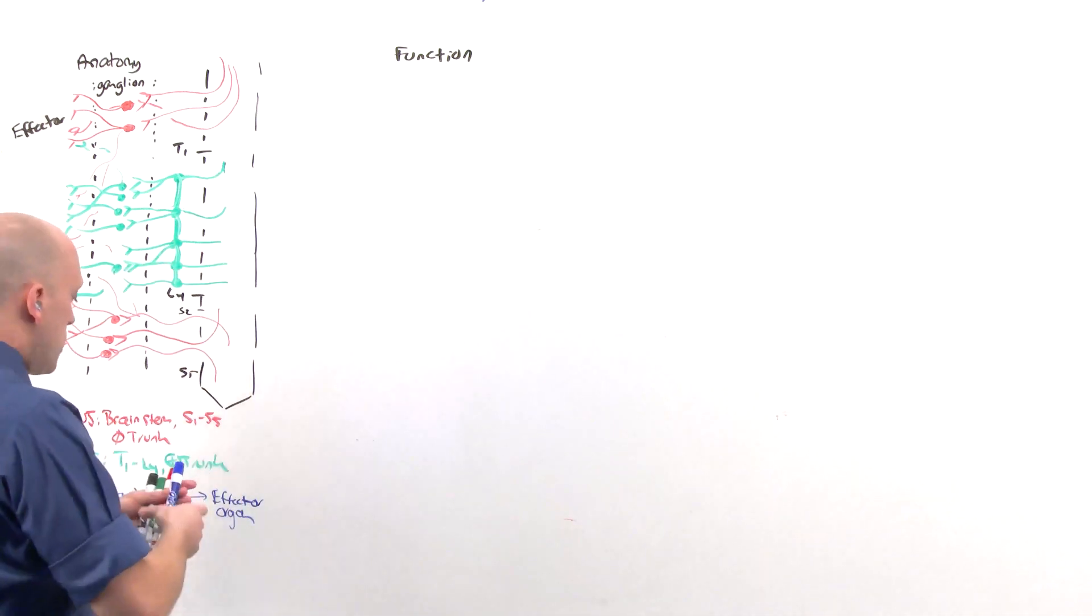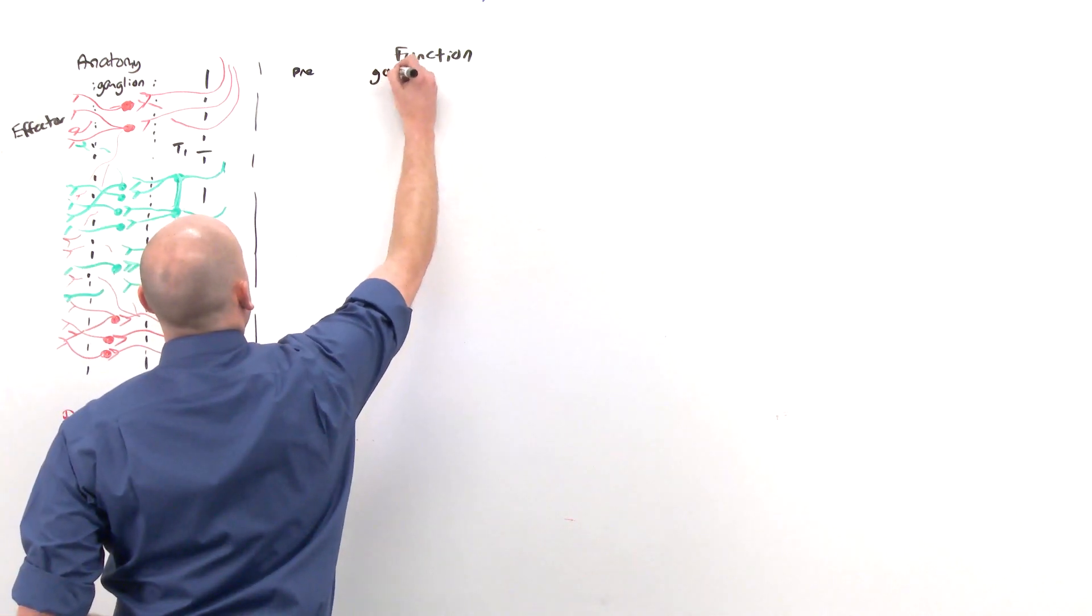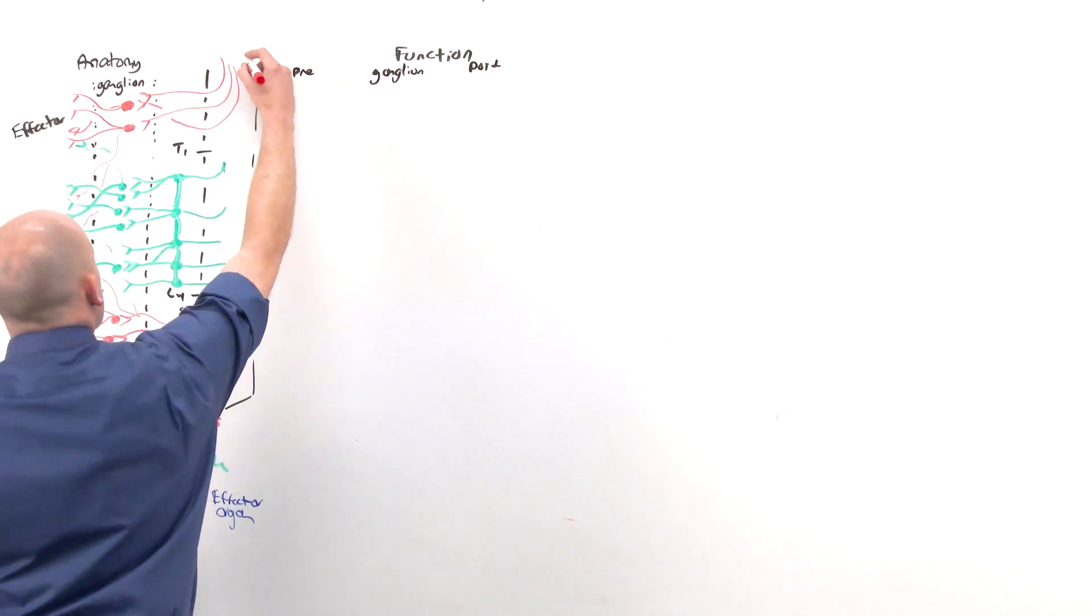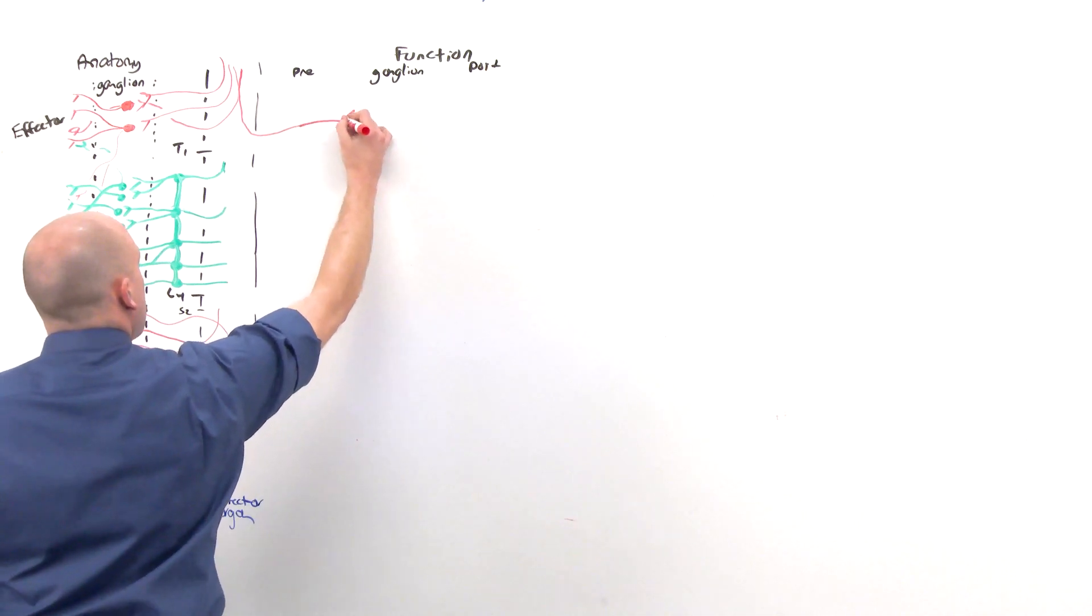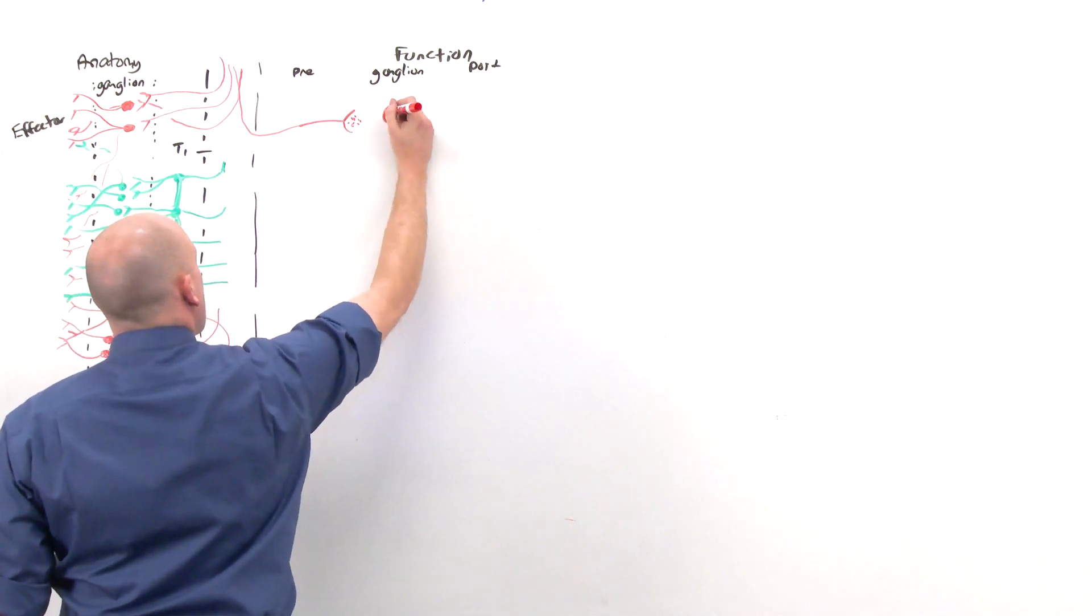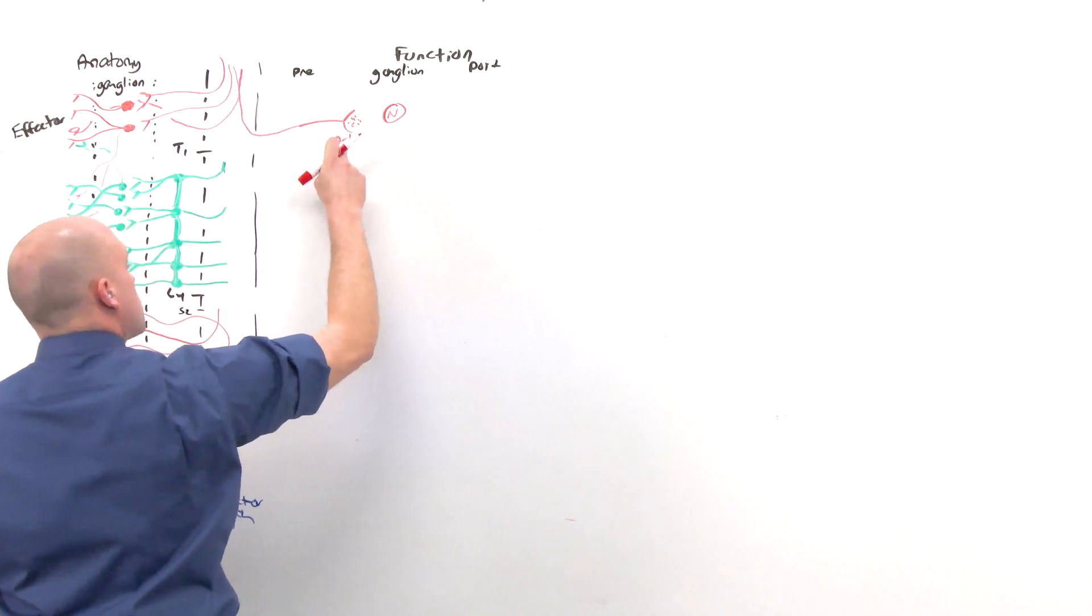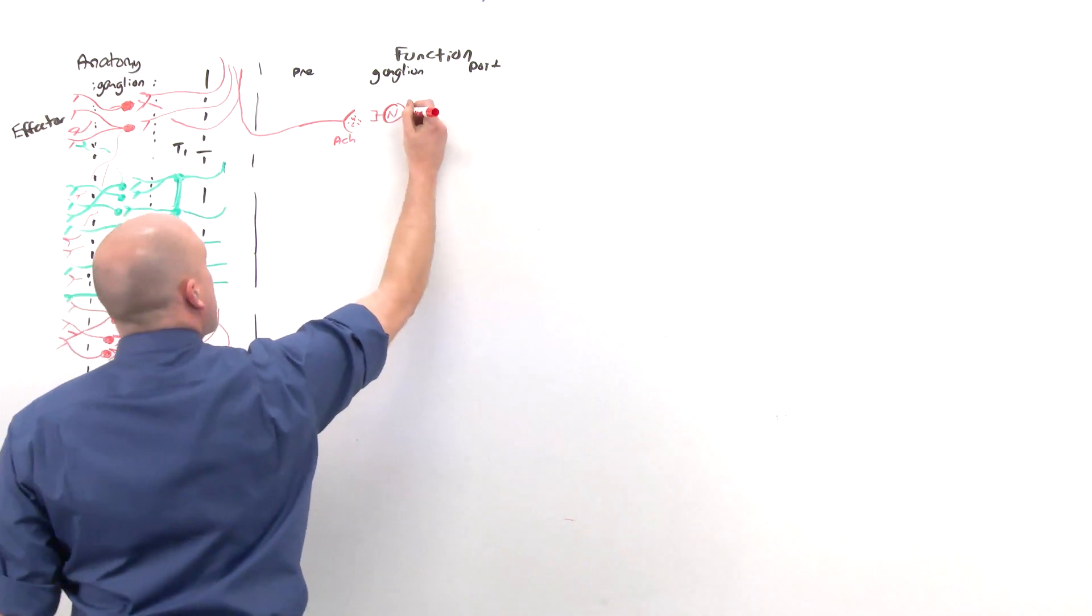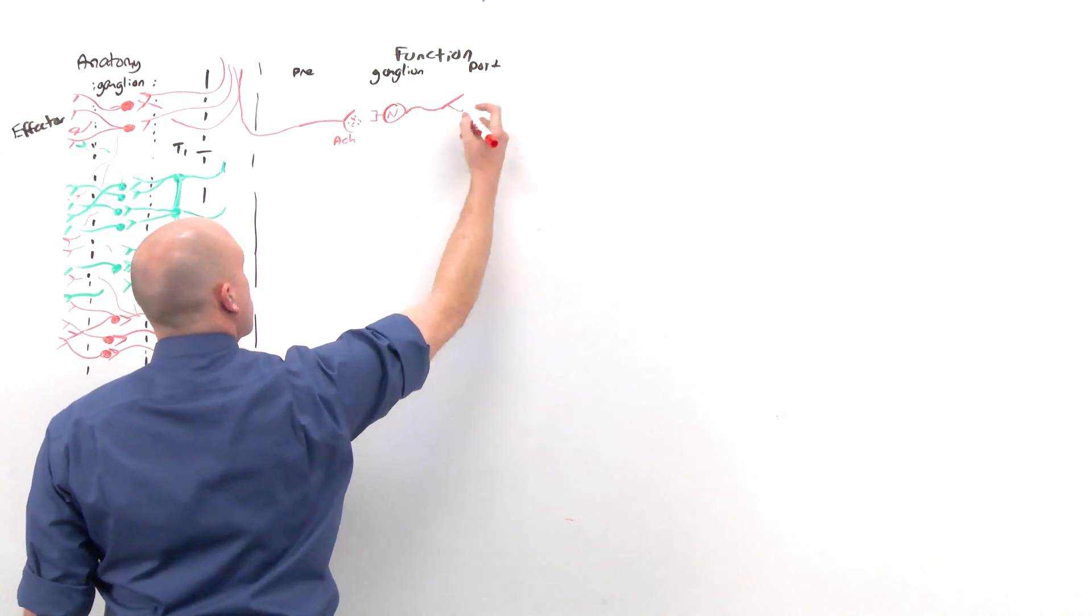On the right, we're going to talk about function, and we still have this preganglionic concept, the ganglion itself, and then postganglionic, or the effector organ. The parasympathetic fibers enter the ganglion and synapse with the postganglionic fiber through nicotinic, big N, acetylcholine receptors. Acetylcholine is released into the space in the ganglion. Nicotinic receptors pick it up, and that tells the secondary neuron to release its signal to the effector cell.